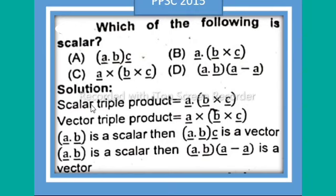Solution: Scalar triple product is a·(b×c). Vector triple product is a×(b×c). (a·b) is a scalar, then (a·b)c is a vector. (a·b) is a scalar, then (a·b)(a-a) is a vector. So option A is correct - that is scalar a·(b×c).